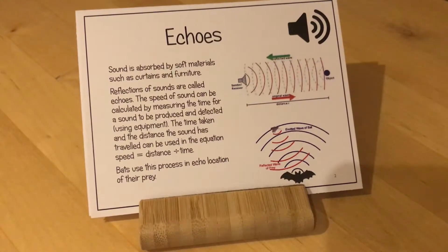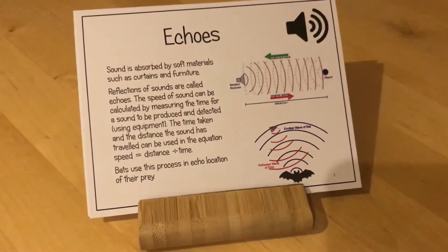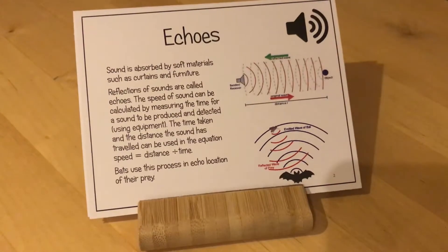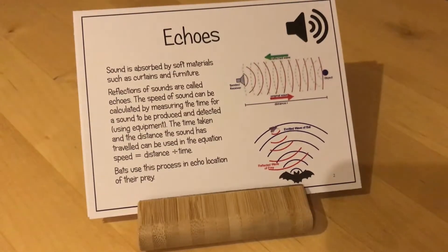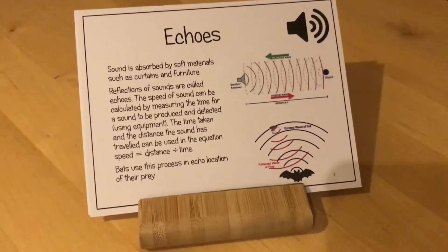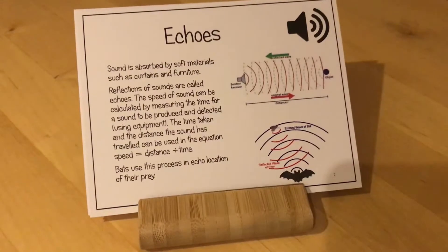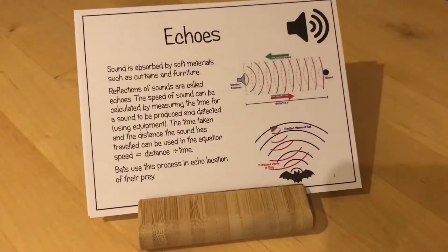This is a process that bats use. Their eyesight isn't particularly good, and they use this process called echolocation to help detect their prey, as you can see in that picture.